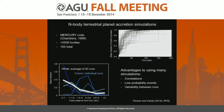We start by running the n-body simulations, which are run using the Mercury code from John Chambers. These are high-resolution simulations — we start with over 2,000 bodies plus Jupiter and Saturn. We've run a total of 100 of them: 50 for each of two sets of initial conditions. That's about an order of magnitude more than most previous studies have run per set of initial conditions.